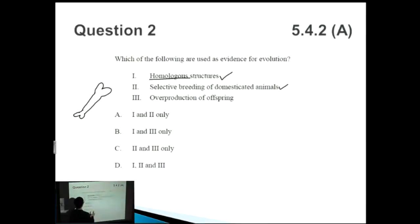So yes. How about three, overproduction of offspring? Now that's just a red herring answer. That doesn't really have anything to do with evidence for evolution. So I'm going to straight away get rid of that. So one and two only is A.